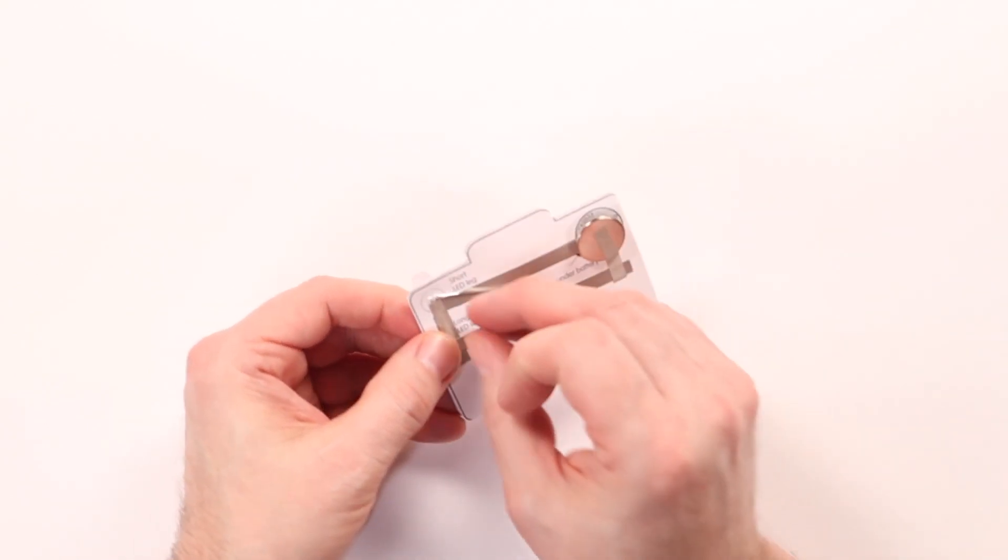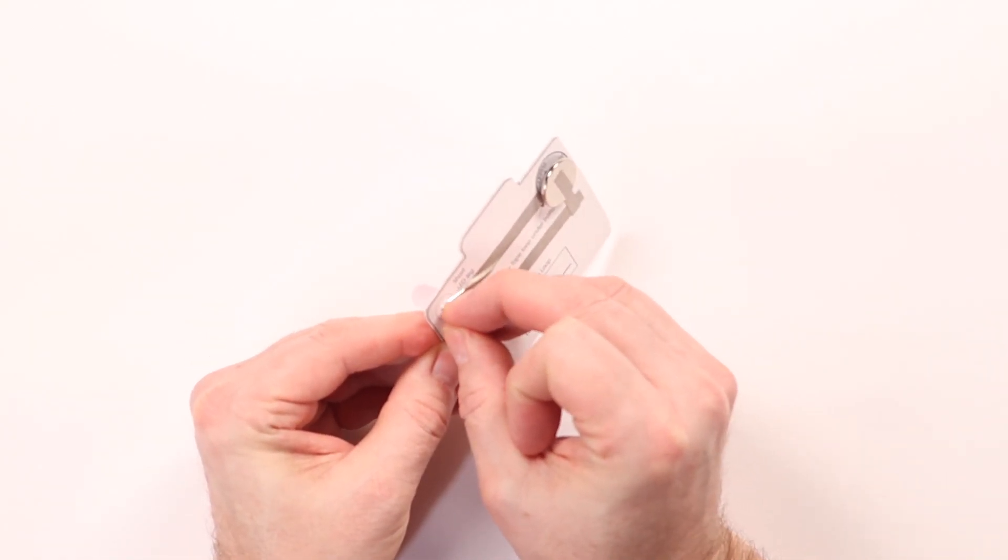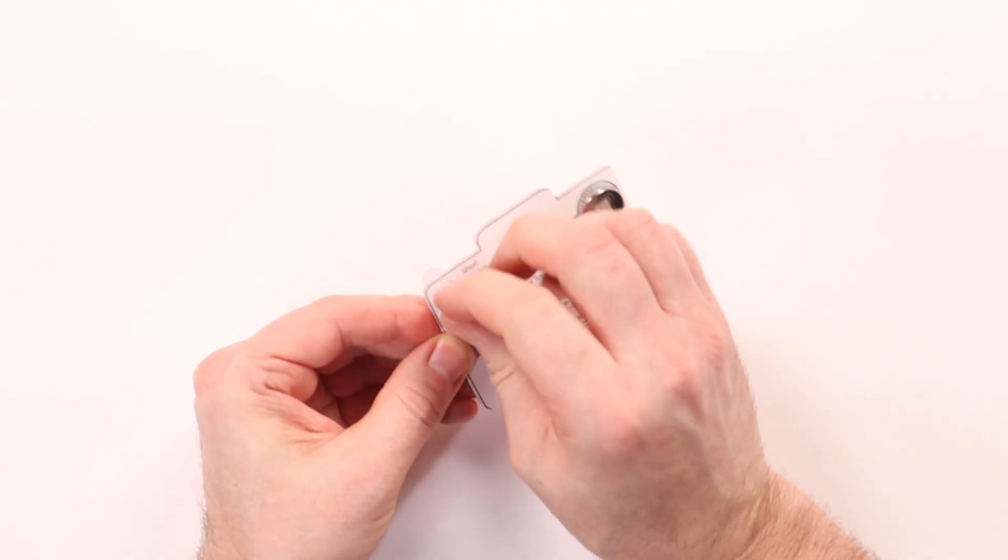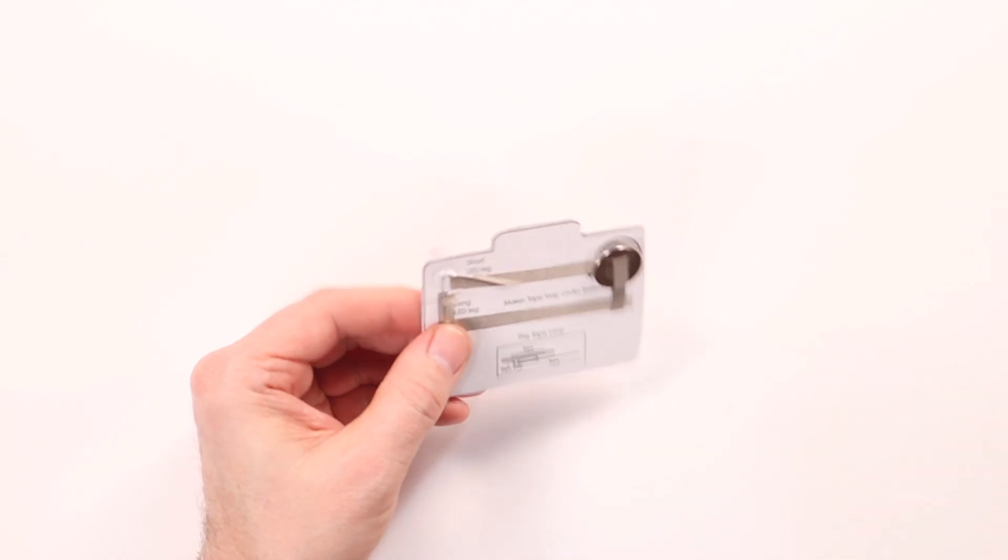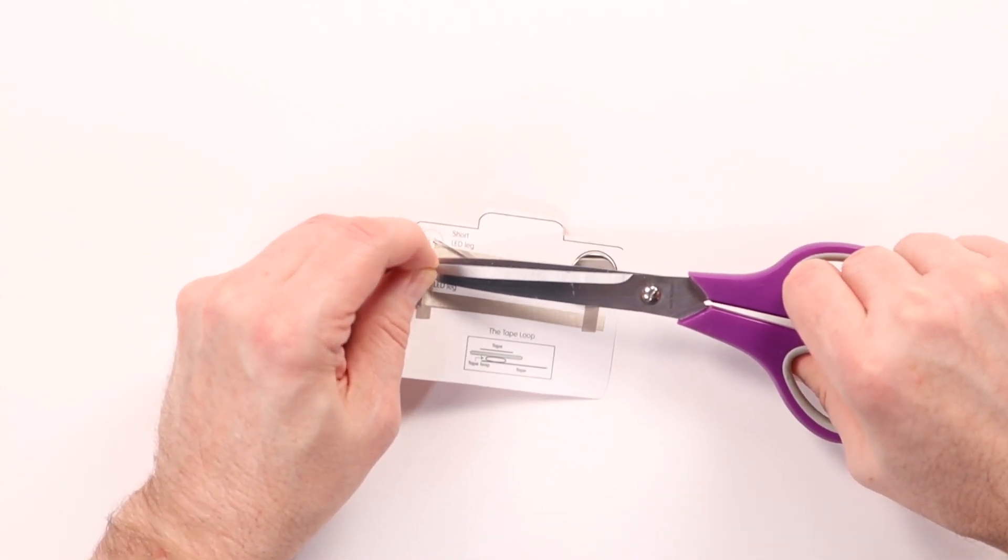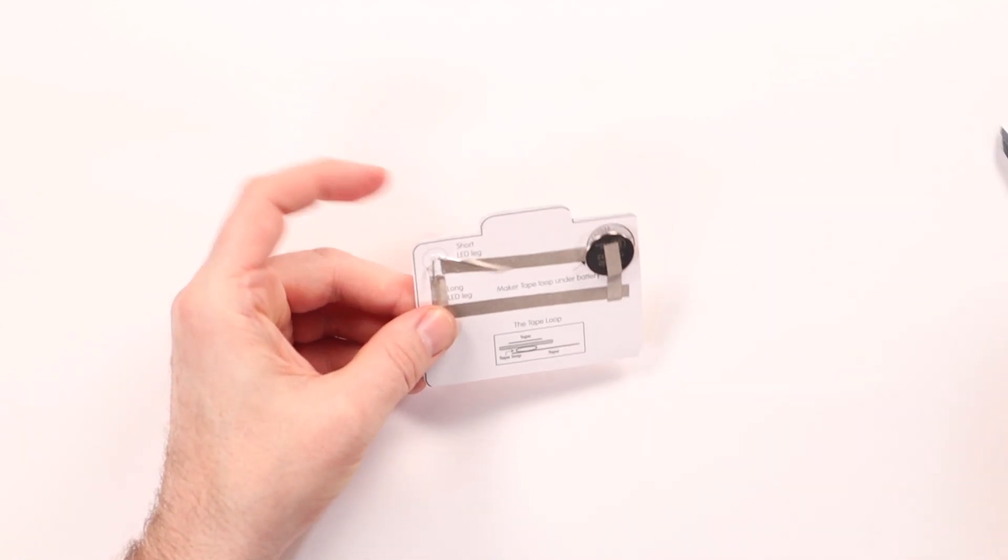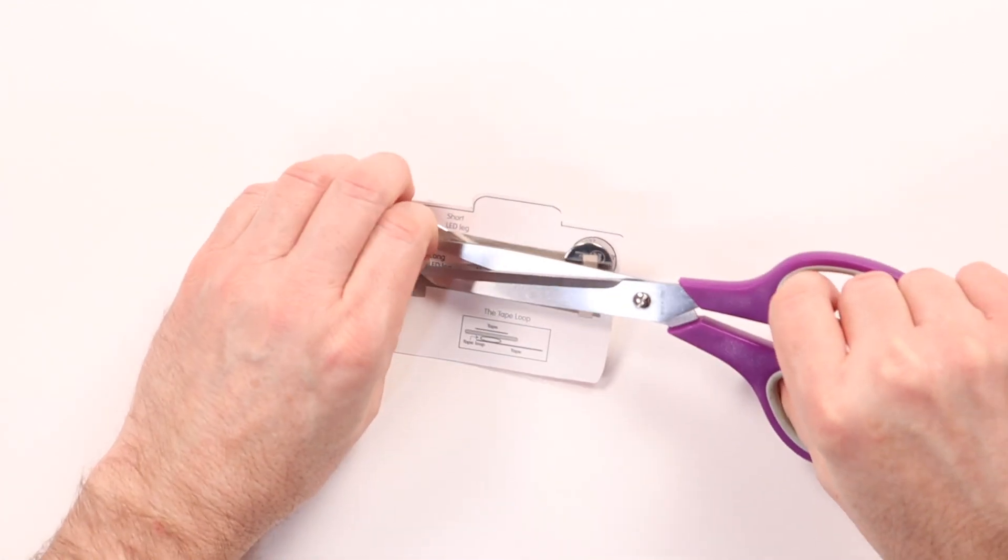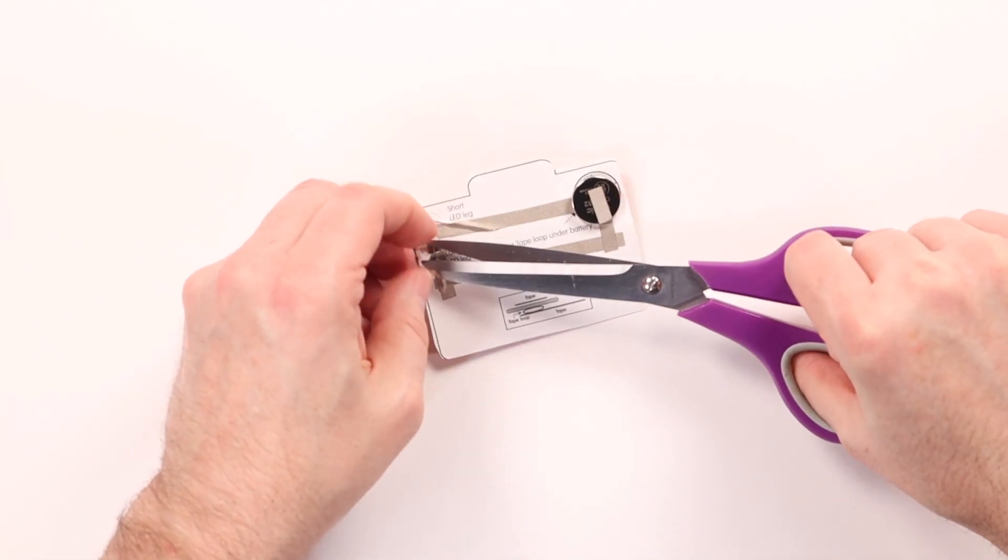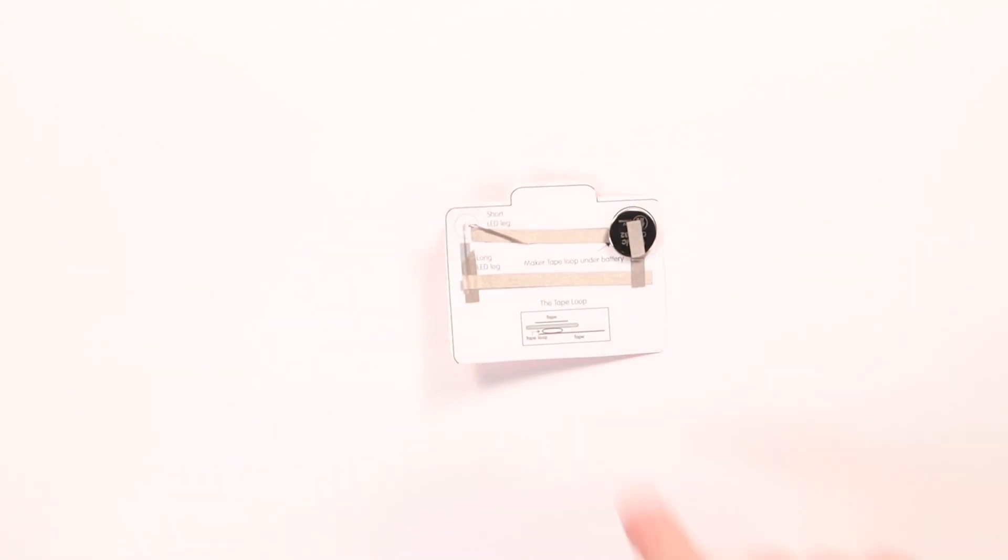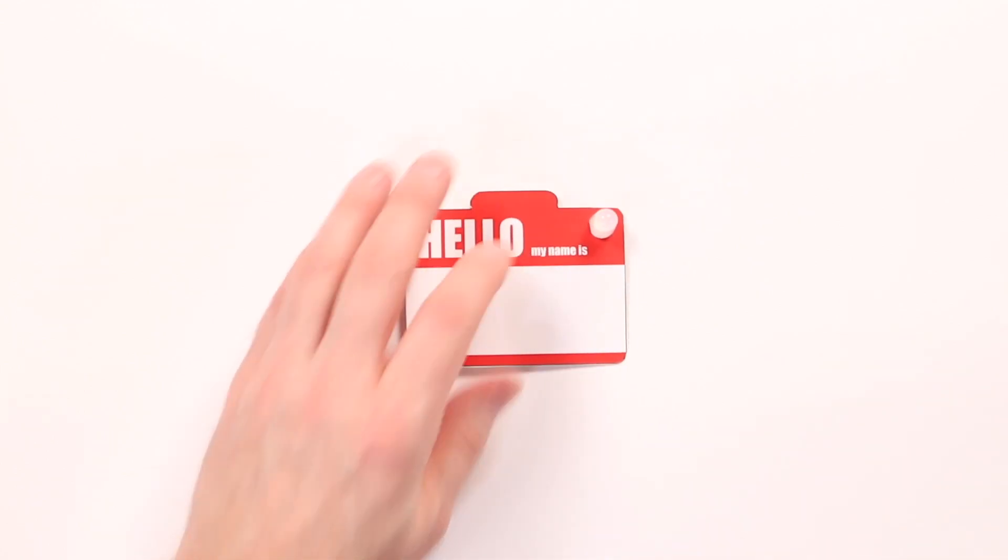Usually, you can just peel off a little bit of the tape that's overlapping. And we'll trim that off. Just a little bit more. Okay, now these pieces are no longer overlapping. And our LED lights up.